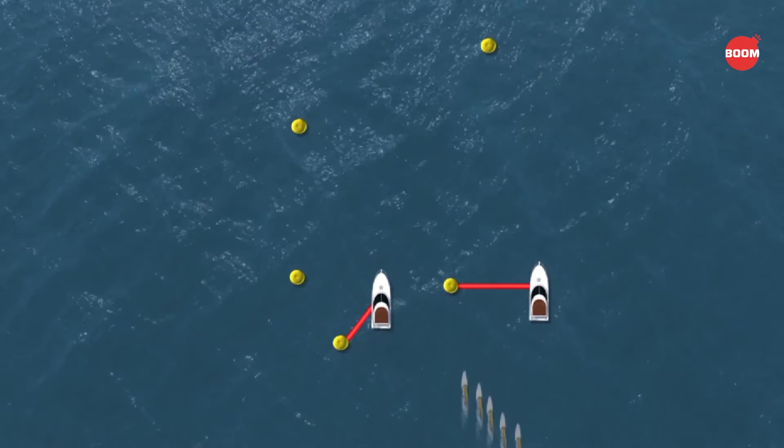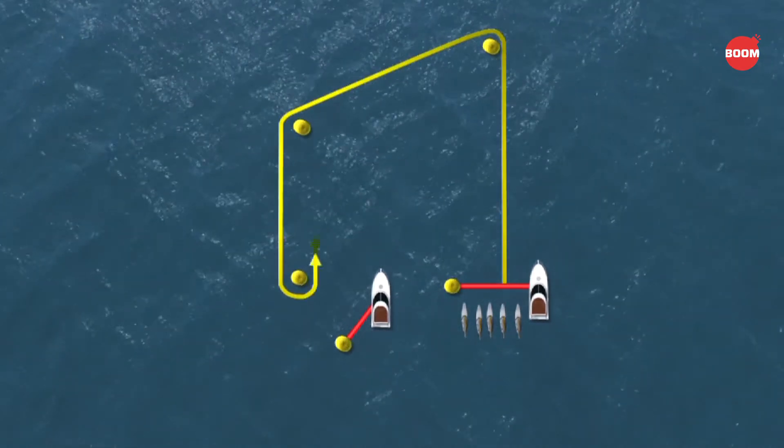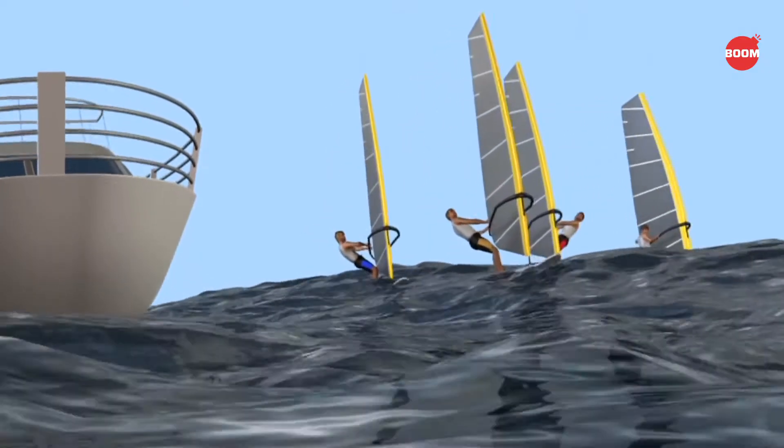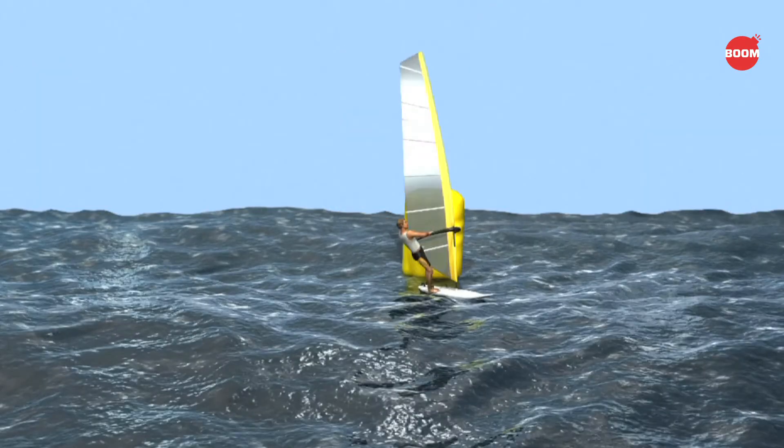Races take place on a designated route. There are no lanes. Surfers have to compete for the best position while making their way around the course's markers.